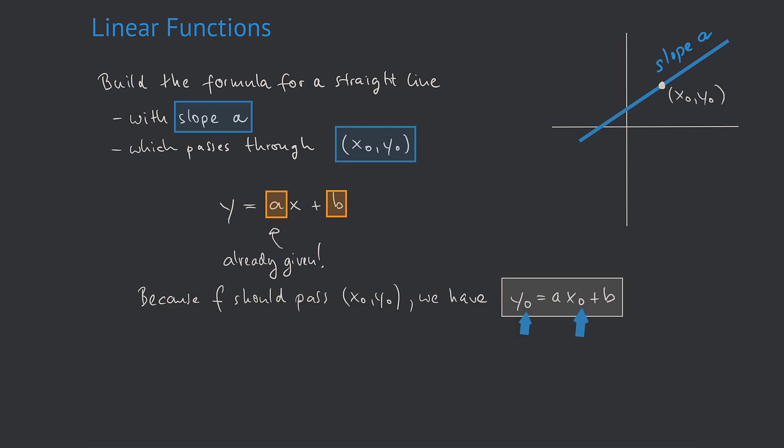So because our line, or we can also say our function f, should pass through that point x0, y0, we have y0 equals ax0 plus b. And mind the zeros.